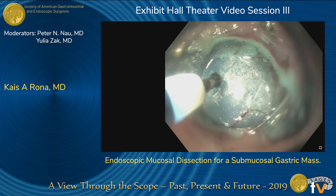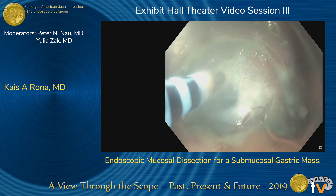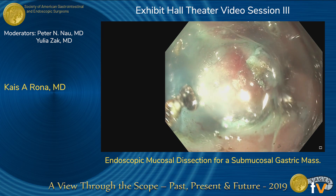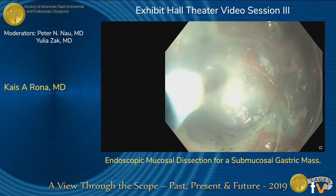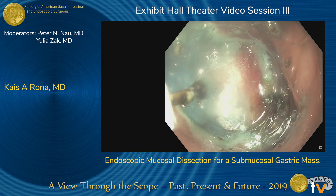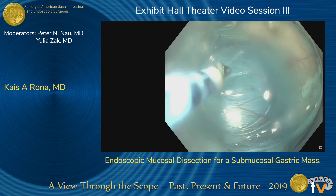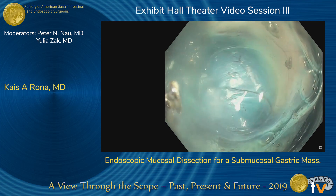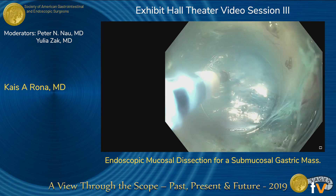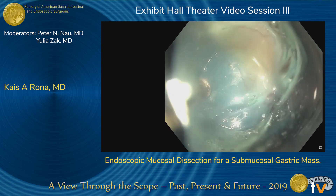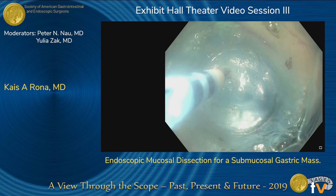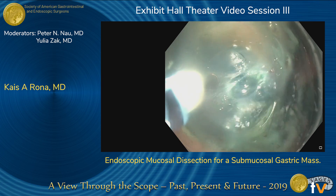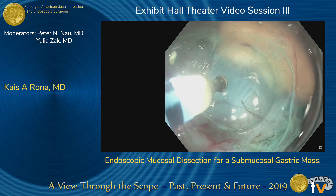With gentle traction, that plane is nicely revealed. The hybrid knife makes the procedure a lot more efficient because there's no need to replace instruments when performing your lift and applying cautery — you can do both functions with the same instrument. You can start to see the mass here on the right upper screen; it appears to be a fatty tumor. We're using blunt traction with the cap and then cauterizing that alveolar tissue.